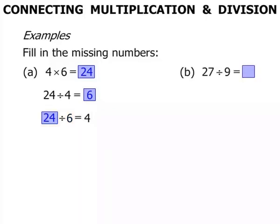Part B. 27 divided by 9 equals something, and then something divided by 3 equals 9, and finally 3 times 9 equals something.